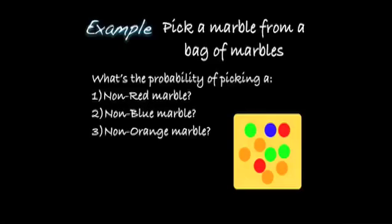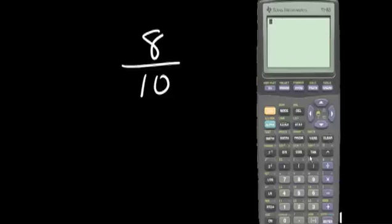For a marble problem: 1. Non-red marble, 2. Non-blue marble, 3. Non-orange marble. There are 8 non-red marbles out of 10 marbles. Numerically, the answer is 0.8.